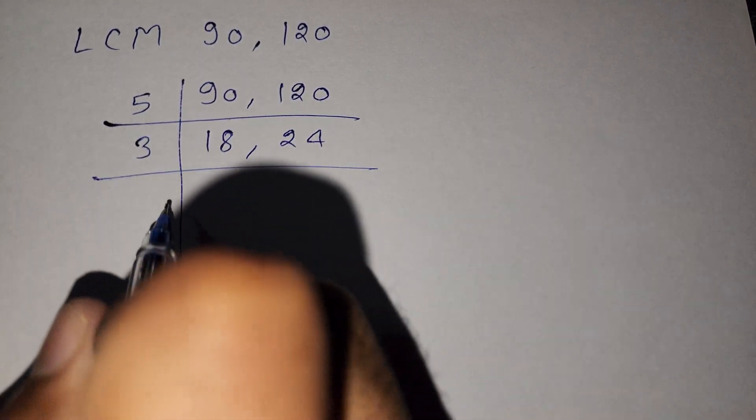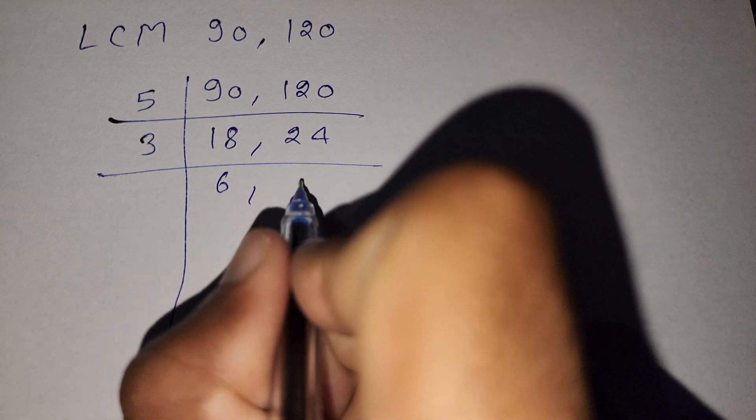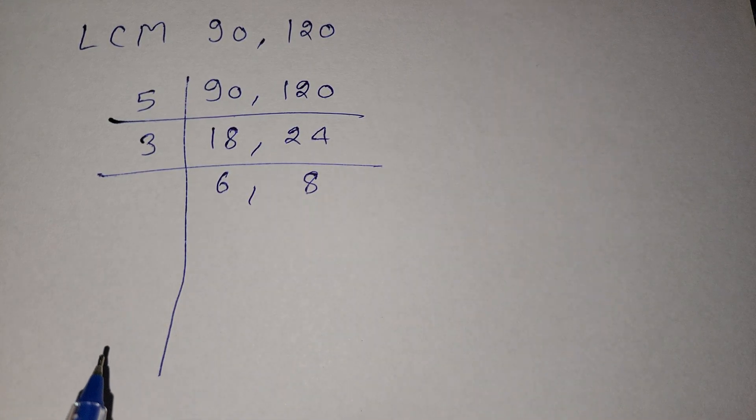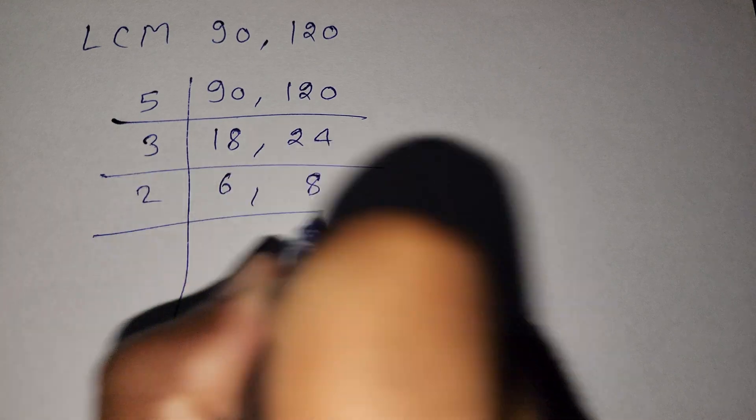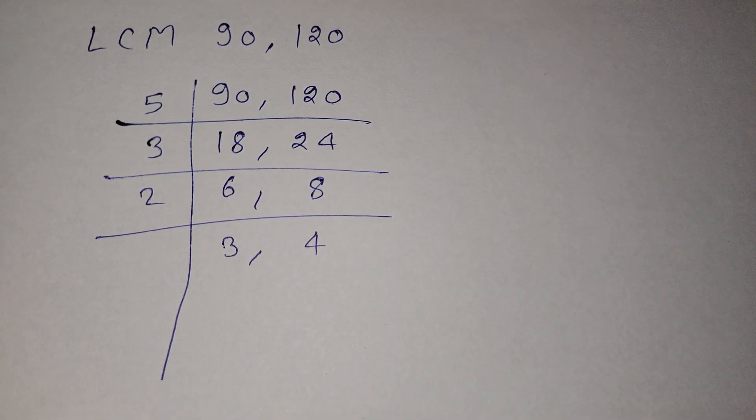We write 6 and 8. Three 6s are 18, and three 8s are 24. Now we divide by 2 to get 3 and 4. Two 3s are 6, and two 4s are 8.